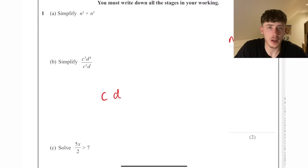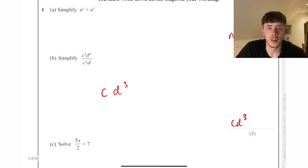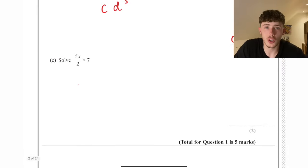Simplify this fraction. When we divide powers they subtract from each other, so it's just going to be c on top and d to the 4 divided by d, so that's d cubed. Solve 5x over 2 is greater than 7. We multiply up the 2 and divide it by 5, leaving it as our final fraction.